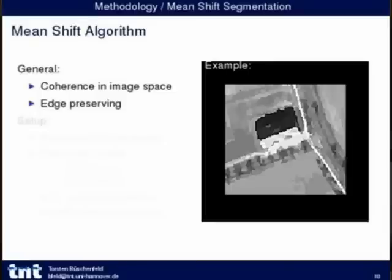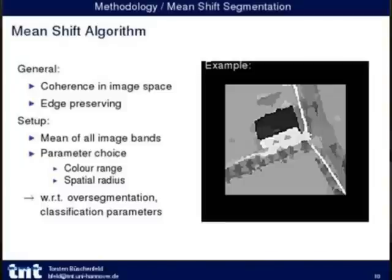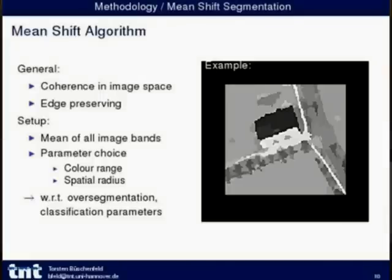You have some coherence in image space but not in feature space, since cropland areas may have different grey values. You can adjust parameters to get larger segments. Our setup takes the mean of all image bands — RGB and infrared — and we choose a color range and a spatial radius. Parameters are set to avoid over-segmentation flooding into other regions, and the spatial radius corresponds to the spatial radius used in the pixel-wise feature extraction.